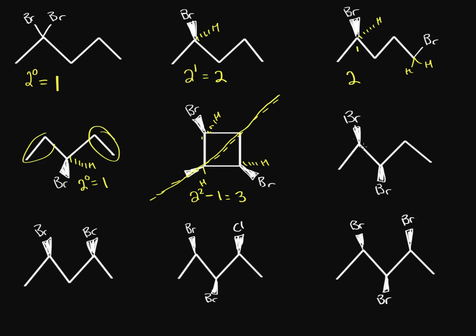What about this molecule? We have a bromine, a hydrogen, a methyl, and the rest of the chain. Over here, we have a bromine, a hydrogen, an ethyl group, and then an ethyl group that has a bromine on it — so it has two different groups. Both of these are chiral carbons, and we don't have any meso structures — we can't cut this in half to make it perfectly symmetrical. So it's just 2 to the 2, which gives us four stereoisomers.